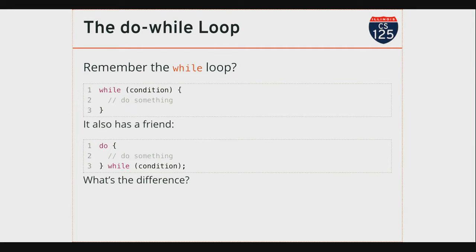The syntax here is designed to help you remember what happens. When I run a while loop, the condition is at the top — that should help you remember it gets checked before I enter the loop. When I do a do-while loop, the condition is at the bottom. It gets checked after the loop executes. So while it's possible for a while loop to never execute if the condition is false, a do-while loop will always execute at least once.